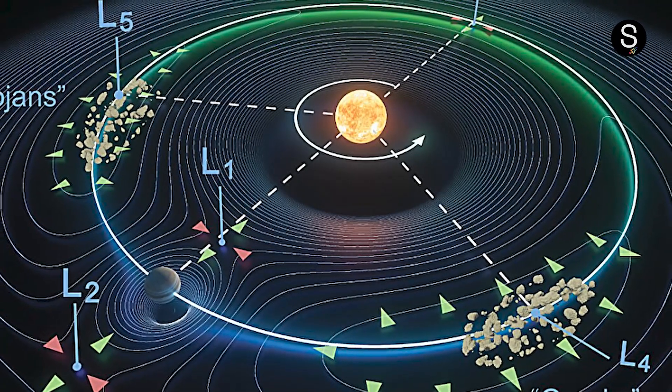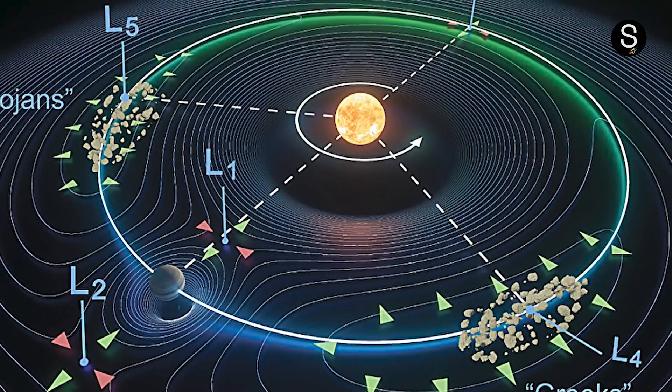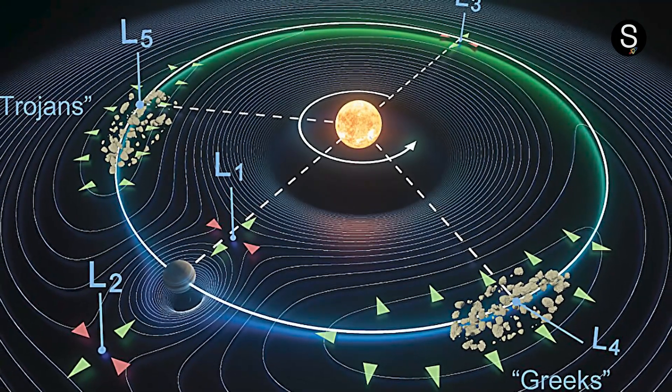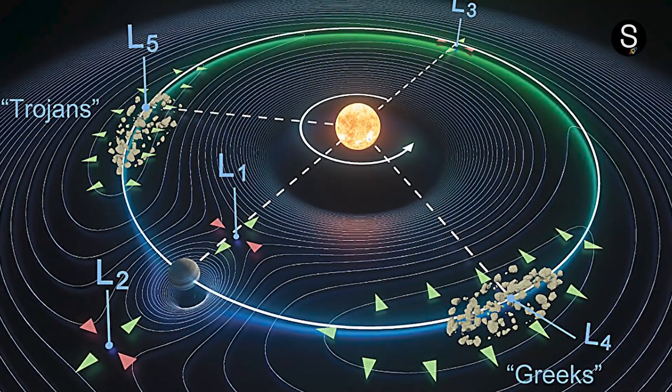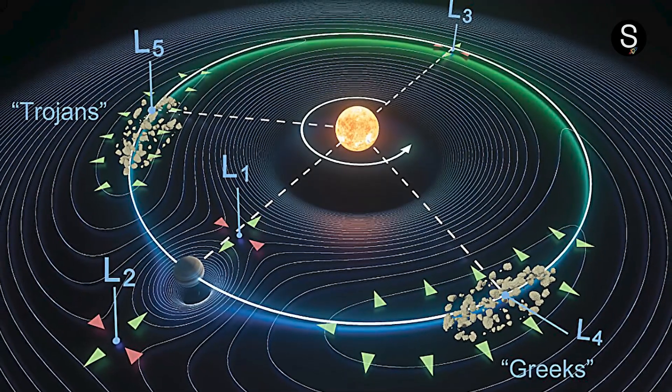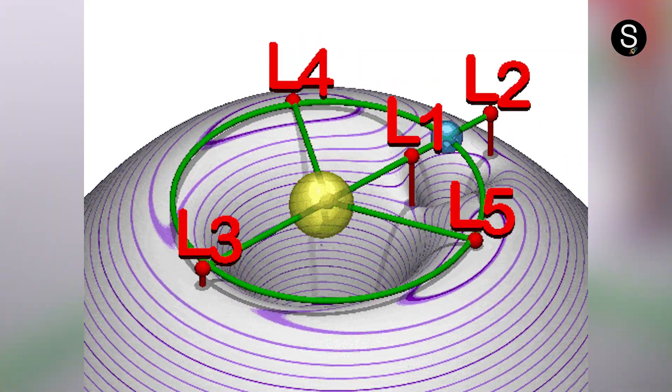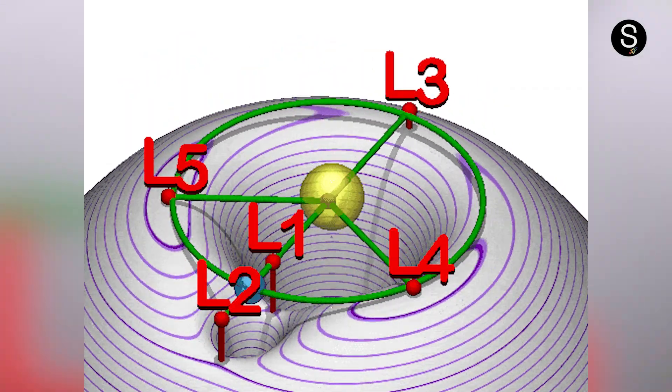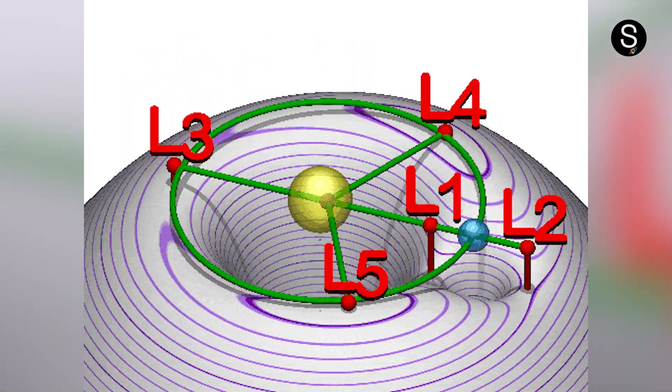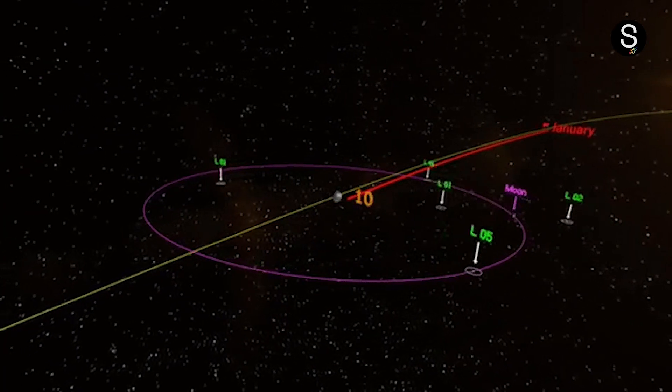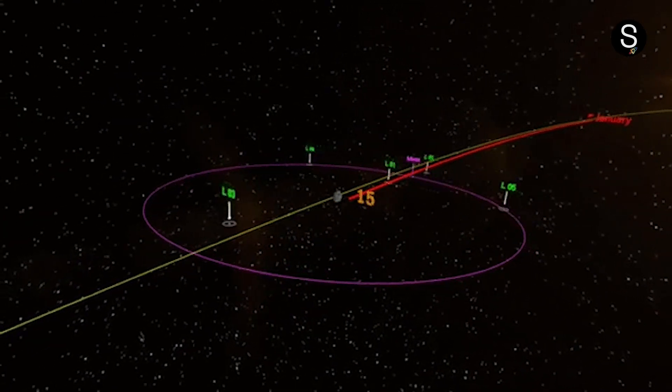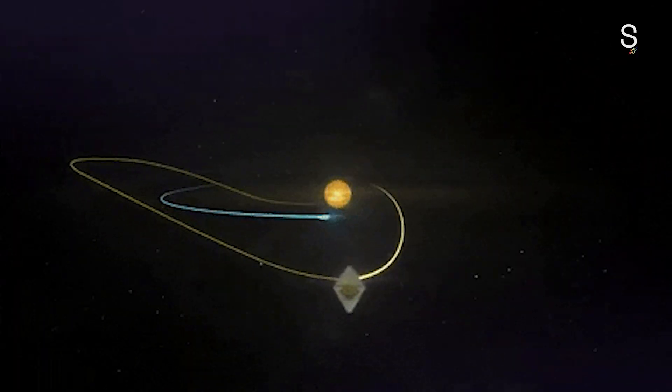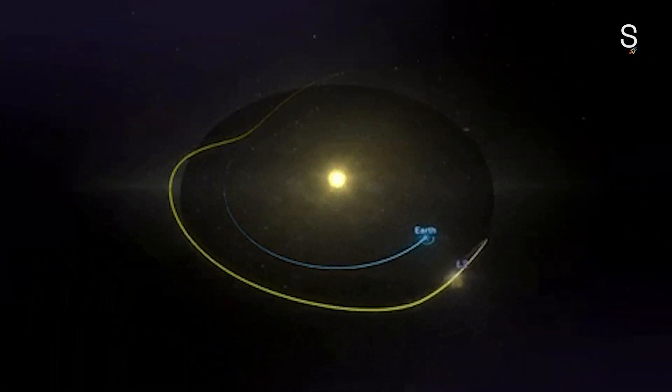Within our solar system, there are locations known as Lagrange points. These are the points at which the gravitational attraction of any two planetary bodies, in conjunction with the velocity of their orbit, come together to form a state of equilibrium. It refers to locations in space that are stable due to the influence of gravity. Because the forces are in equilibrium, the objects that we send to these locations either have a tendency to remain there naturally or can be maintained there with a little amount of energy.